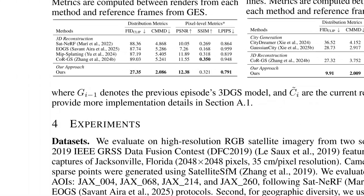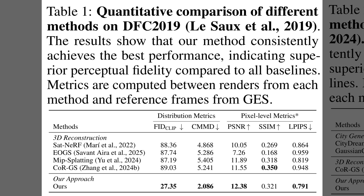Figure 3 outlined the pipeline. Table 1 reports how it stacks up on the DFC-2019 benchmark. The method leads across metrics, with the lowest CLIP-FID around 27, meaning the generated images match real image distributions better using language-vision features. It also posts stronger pixel scores, like higher PSNR and SSIM, and lower LPIPS. These gains matter because lower distribution distances and sharper pixels align with more realistic, cross-view consistent scenes.